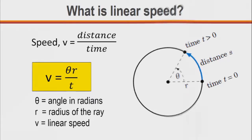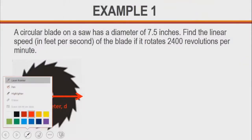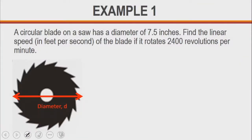Example number one: we want to find the linear speed in feet per second of this circular blade that is rotating 2,400 revolutions per minute, and we are given the diameter of the blade. Let's see what we are given.